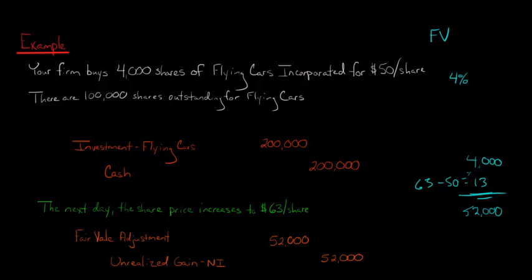So we're going to credit unrealized gain on investment, and I just put a little N-I there so you know it goes to net income. We're going to credit that for $52,000. Now, it seems weird. You would think you would just debit investment flying cars for $52,000, but you don't. You debit this thing called fair value adjustment. So that's what you debit.